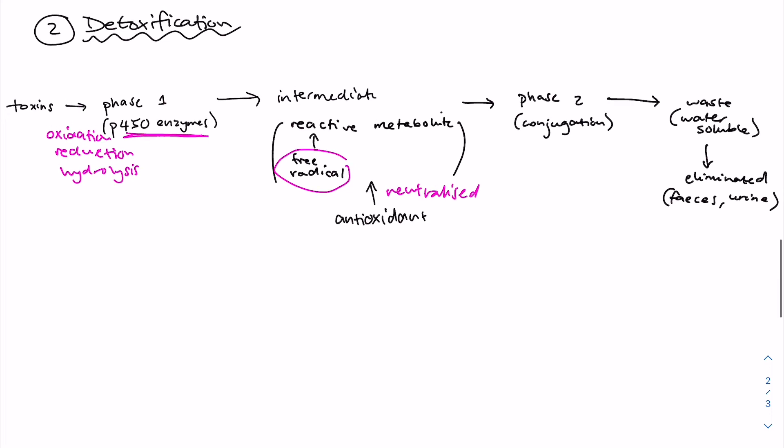The converted chemical is then attached to another substance via a conjugation reaction. This makes the compound even less harmful and also makes it water-soluble, allowing for it to be eliminated from the body more easily, for example, through urine by the kidneys, or as feces.